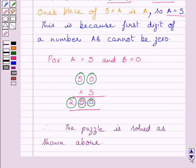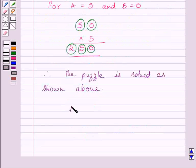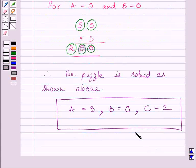So, here, we have solved the given puzzle. Required value of A is 5, value of B is 0 and value of C is 2. So, this is our required answer. This completes the session. Hope you understood the solution. Take care and bye for now.